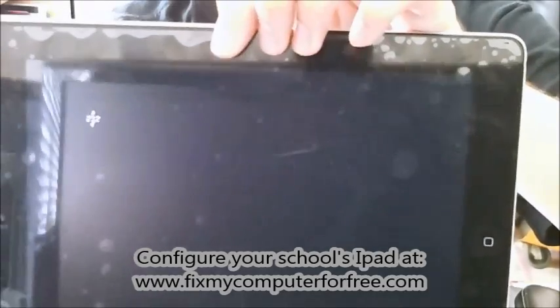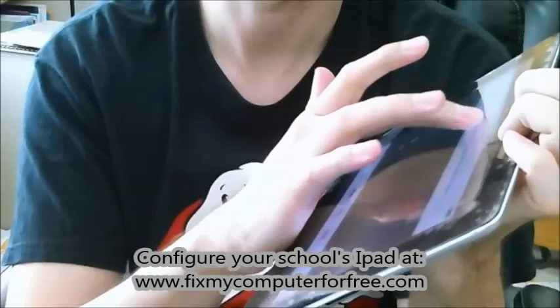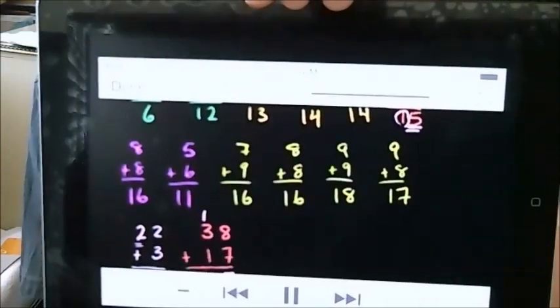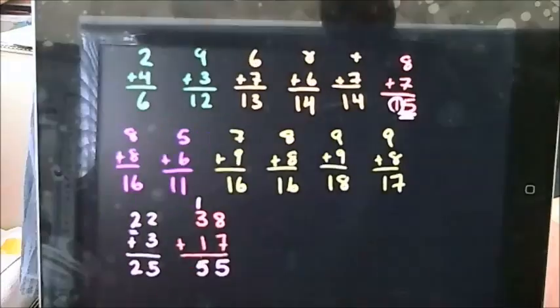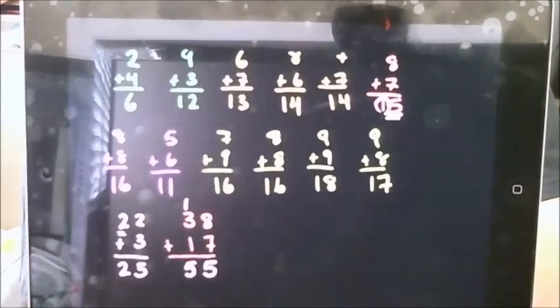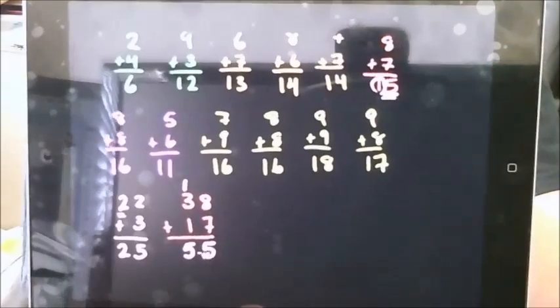And what I even more want to show you is that we now have all the tools we need to really tackle any problem. 4 plus 1 is 5, so you get 55. 1 plus 3 plus 1 is 5. 38 plus 17 is 55, or 5 tens and 5 ones, that's the same thing as 55.